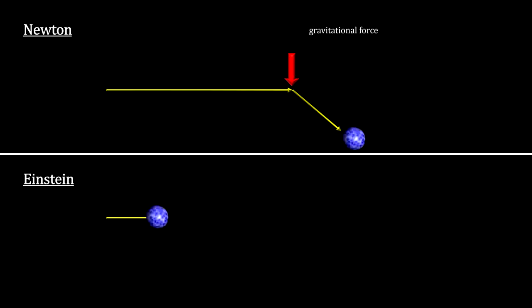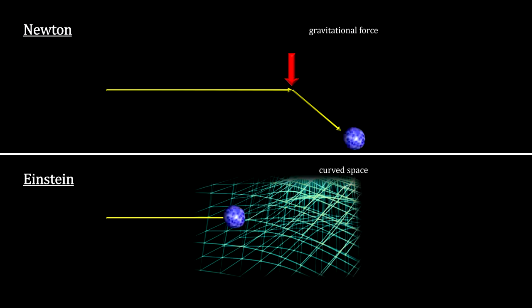Einstein, on the other hand, had massive objects curving the space around them. An object in motion traveling through this curved space follows geodesics, the shortest path between two points, unless acted on by a force.